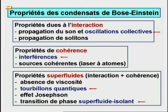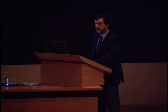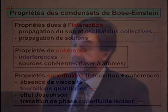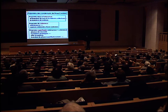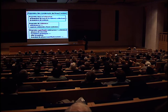C'est la raison pour laquelle on a introduit les noms séduisants de lasers à atomes pour décrire ces systèmes. Enfin, il y a des propriétés qui relèvent de la nature superfluide et qui mettent en jeu à la fois les interactions et la cohérence des condensats. Parmi ces propriétés, il faut mentionner l'absence de viscosité, l'existence de tourbillons quantiques, l'effet Josephson, la transition de phase superfluide-isolante. Dans les prochains transparents, je vais illustrer seulement la propriété indiquée avec une flèche rouge.